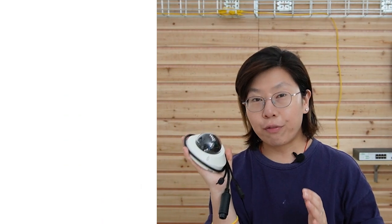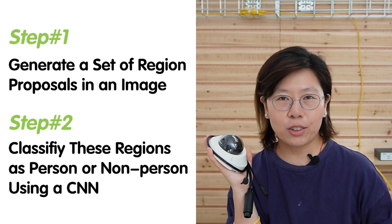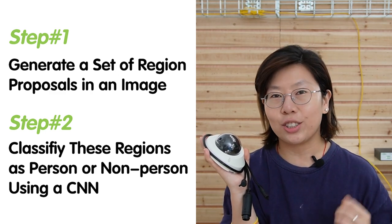This 4K IP camera uses a region-based convolutional neural network, also known as RCNN, as its deep learning algorithm. This is a two-step approach: it first generates a set of region proposals in an image, then classifies those regions as person or non-person using a CNN. This algorithm leverages artificial neural networks to learn and recognize complex features in visual data, enabling highly accurate and robust person detection.